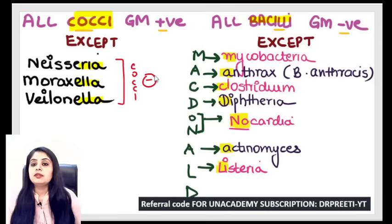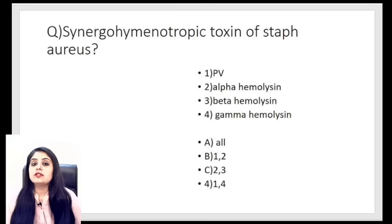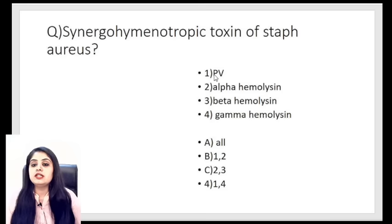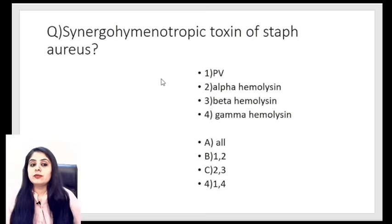I'm going to stick to the cocci for now. Let me make you attempt a question first and then we'll start discussion. The synergohymenotropic toxin of Staph aureus — is it PV, alpha hemolysin, beta hemolysin, or gamma hemolysin? Some of you know this, some don't. I'll teach you first and get back to this question.